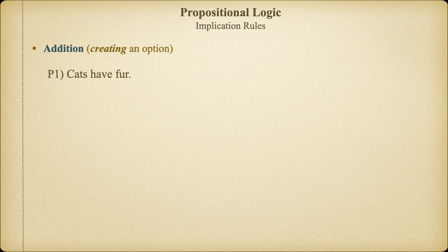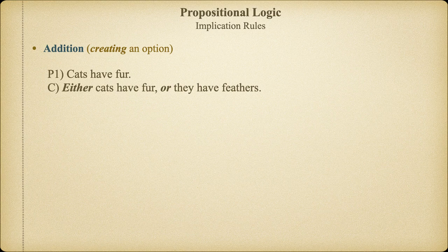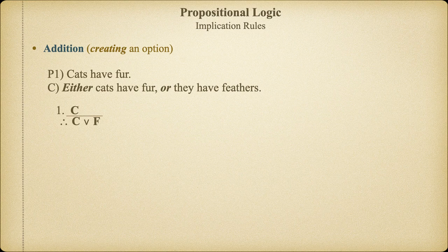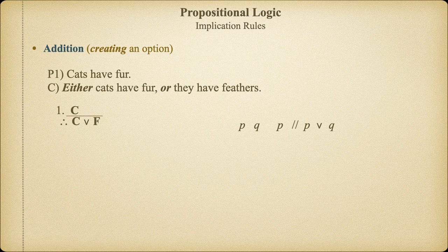So, if I have the proposition cats have fur, using disjunction, I can add anything I might want or need. In this case, cats have feathers. Because I'm using disjunction, and because I've already assumed that C is true, I can simply add whatever I like.